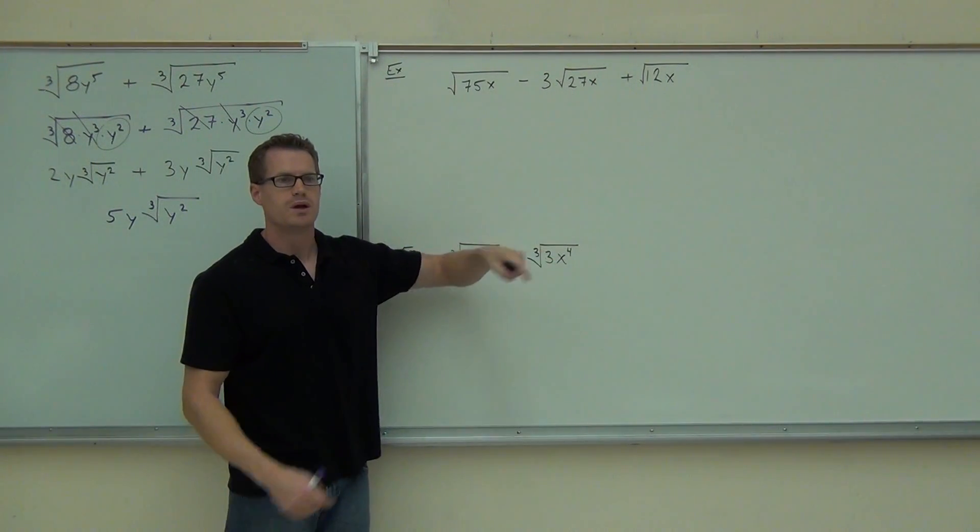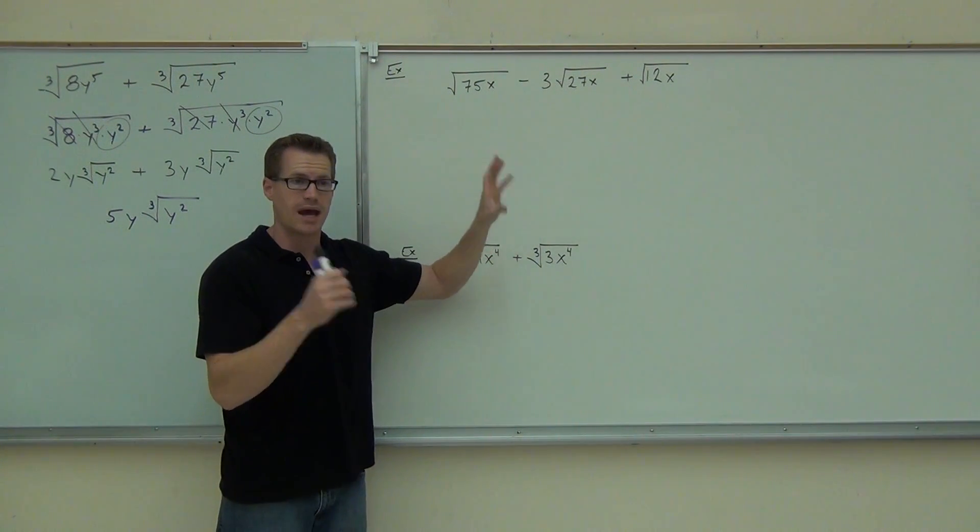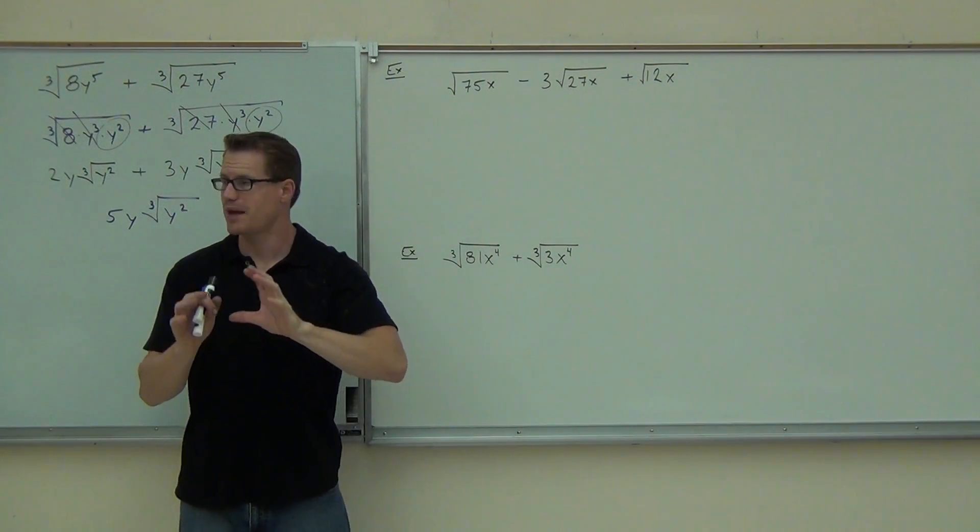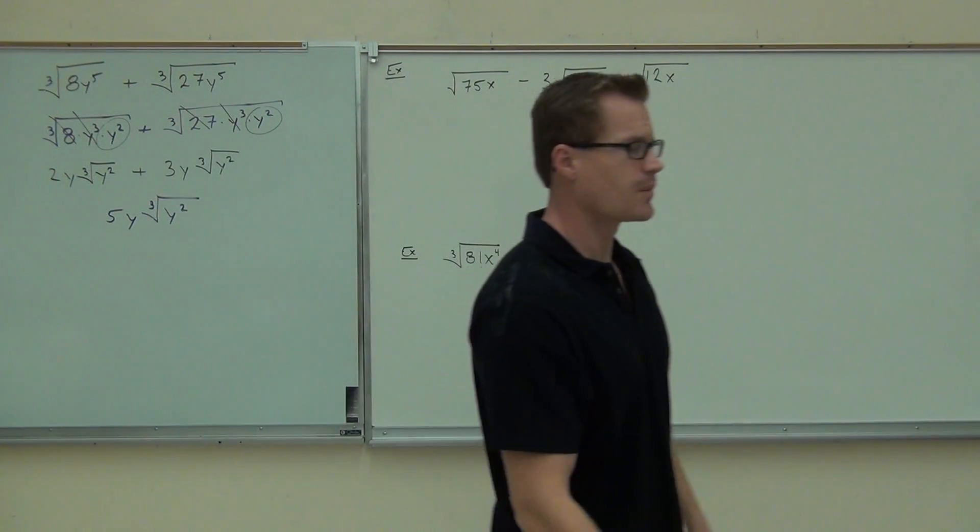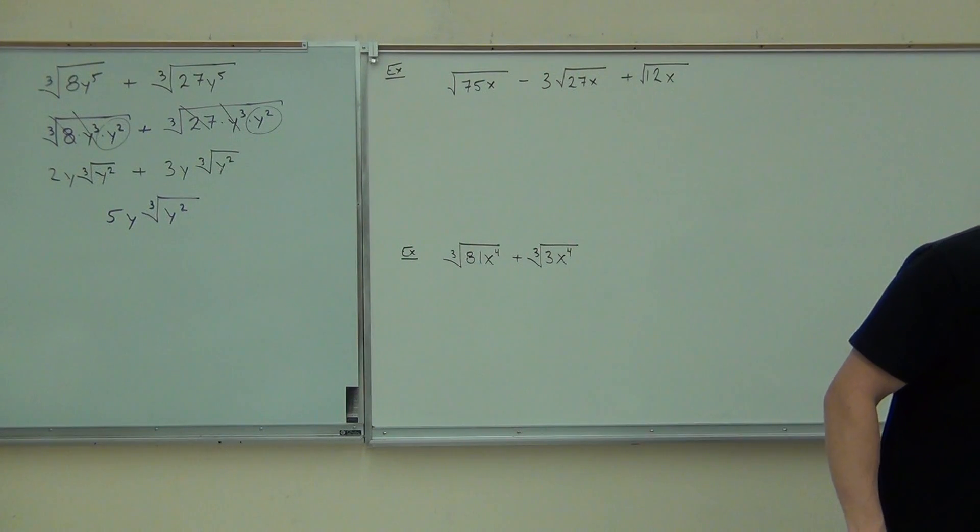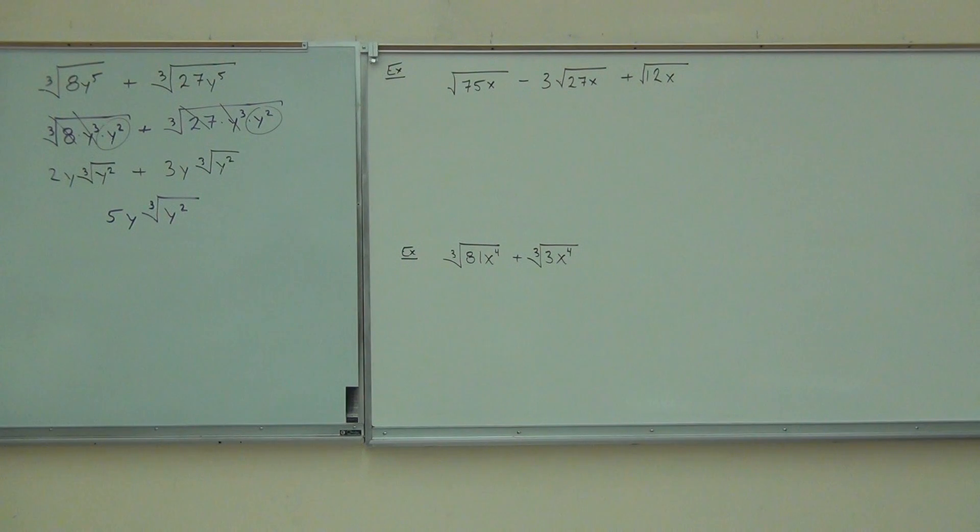5y cube root of y squared. So nothing else changes besides that coefficient. Let's go like that. I want you to try these two on your own. So we're simplifying these roots. Go all the way down. Make sure we can add them together if you can. If you can simplify and add them together, do that. I'll be walking around. If you need help on this, raise your hand, let me know.